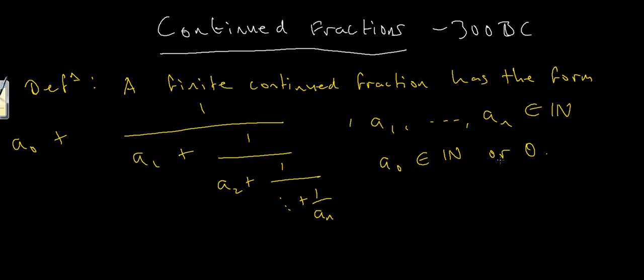And some people like to denote this in square brackets as square bracket a0, a1 up to an. This is just fancy shorthand notation for the continued fractions. And some people like to use a semicolon in front of this first term to emphasize the fact that it's the first term, but it's not really necessary.